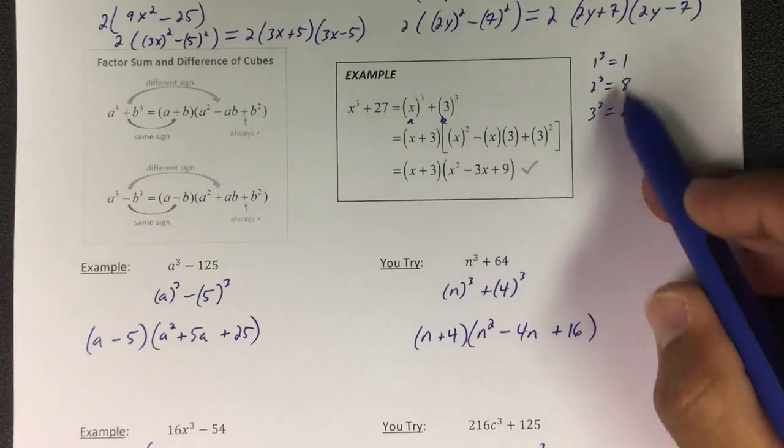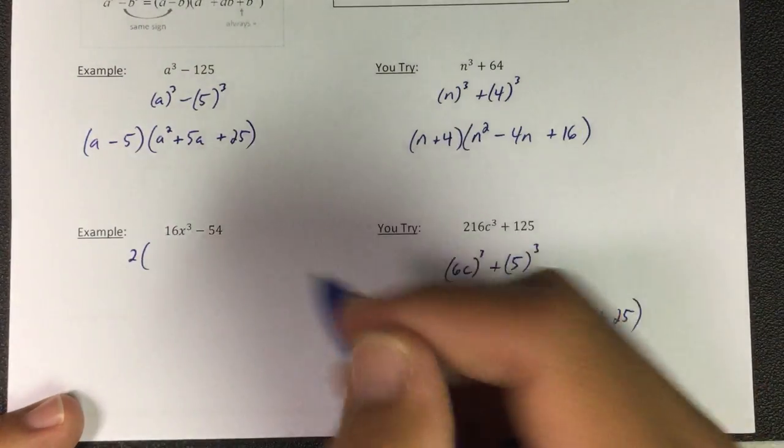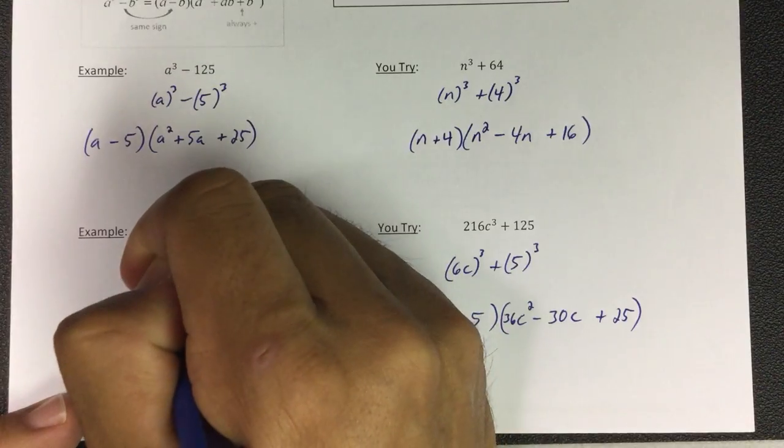You can see up here it's not on the list. You go from 8 to 27, so 16 wouldn't work and neither would 54. But if I divide out a 2, now I get 8x cubed minus 27.